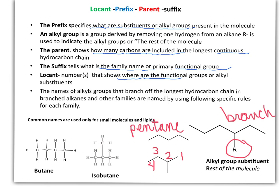Before we name more complex alkanes, we need to define an alkyl group as the part of the molecule that branches off the longest hydrocarbon chain. An alkyl group is usually represented by the letter R, and you can think of it as the rest of the molecule.